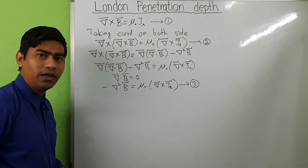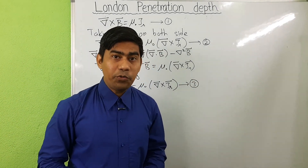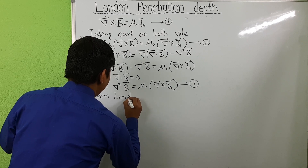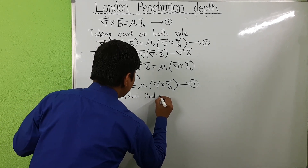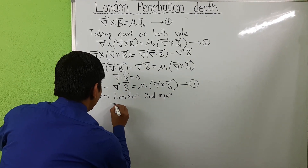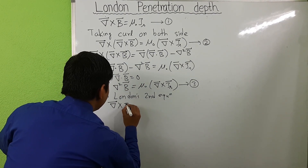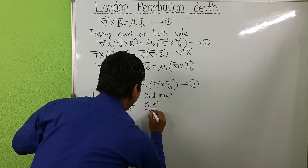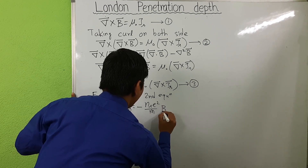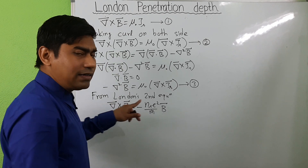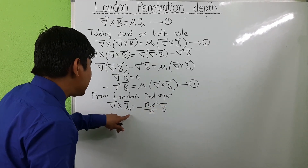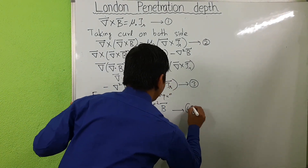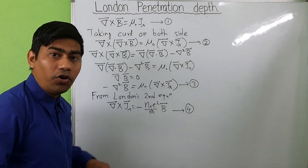From London's second equation, we know that curl of j_s equals minus (n_s times e-squared divided by m) times B. Let this be equation four.